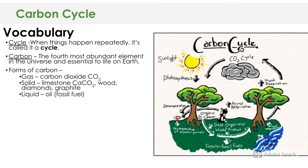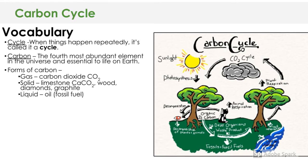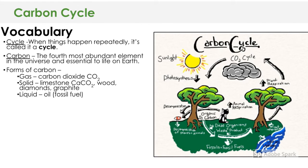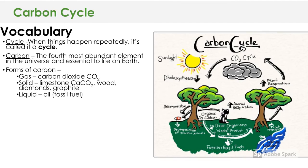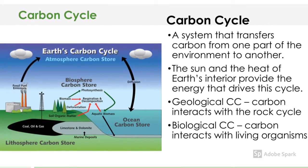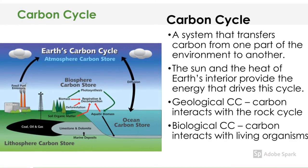We have also been discussing carbon, which is the fourth most abundant element in the universe and essential to life on Earth. Forms of carbon we've discussed include carbon dioxide, limestone — which is what we were talking about when I said it was in the dirt — wood, diamonds, graphite, and liquid carbon, which we find in the form of fossil fuel. In general, the carbon cycle is a system that transfers carbon from one part of the environment to another.